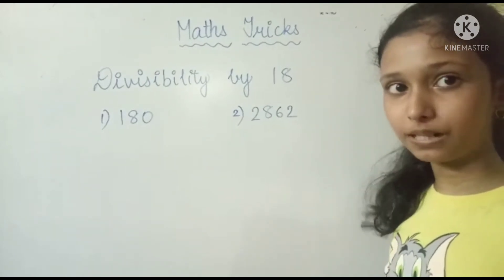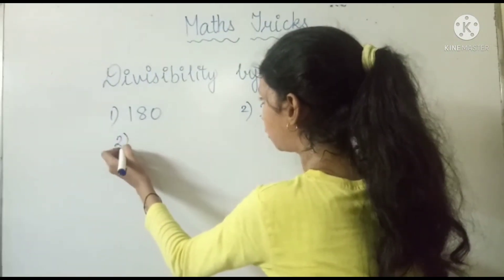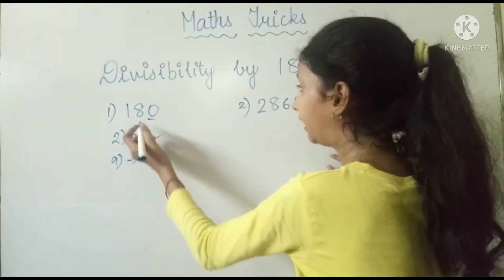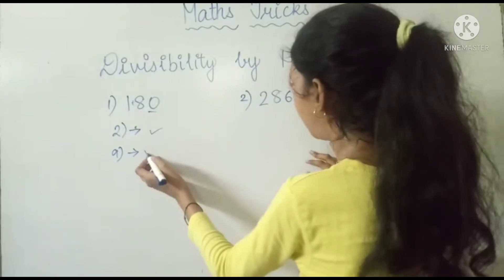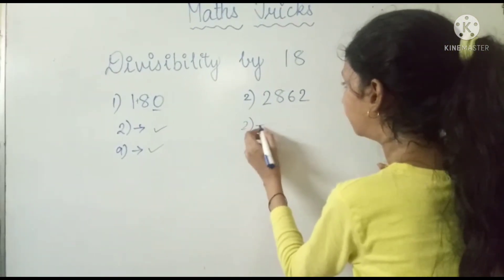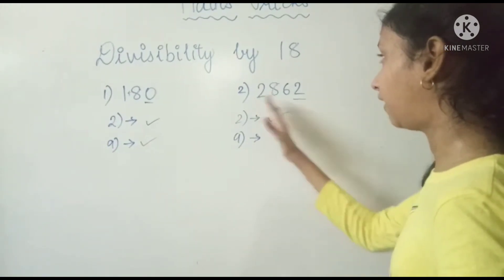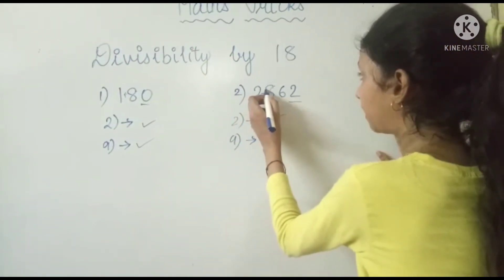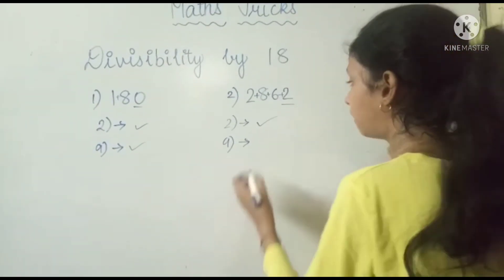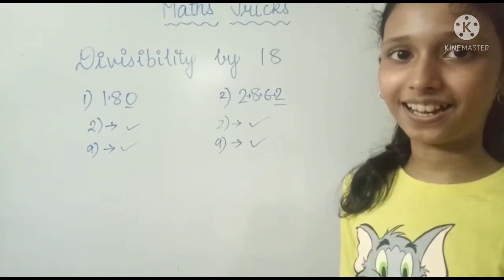Let's check 180. For 2: the number ends with 0, so it is even — fulfilled. For 9: 1 plus 8 is 9 — fulfilled. So 180 is divisible by 18. Next, 2862. For 2: the last digit is 2, so it is even — fulfilled. For 9: 2 plus 8 is 10, 10 plus 6 is 16, 16 plus 2 is 18, and 18 is a multiple of 9 — fulfilled. So 2862 is also divisible by 18. That's the end of the video — please like and subscribe. Thank you!